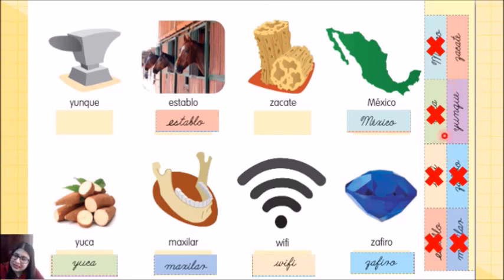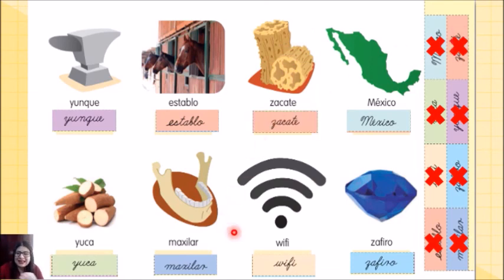De este lado, en color lilita, tenemos otra palabra que dice yunque. ¿Cuál de todas estas palabras, dibujos, perdón, es la que representa el yunque? Correcto, esta. Entonces, lo vamos a recortar y lo vamos a pegar en donde va. Por último, esta palabra dice zacate. ¿Cuál de estos dibujos es el del zacate? Fantástico, este que está aquí. Entonces, vamos a recortar la palabra y lo vamos a pegar en donde va. Genial, chicos, lo hicieron fabuloso.